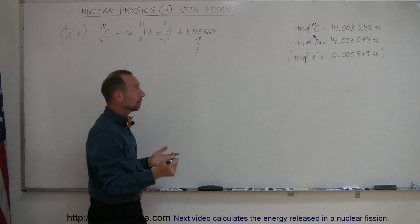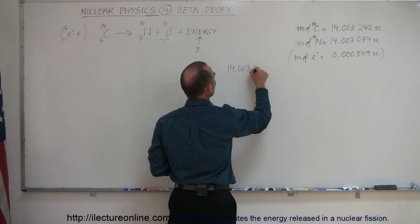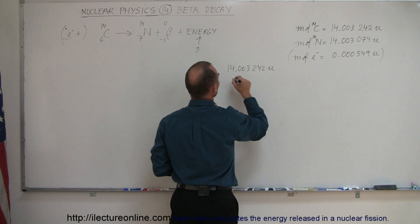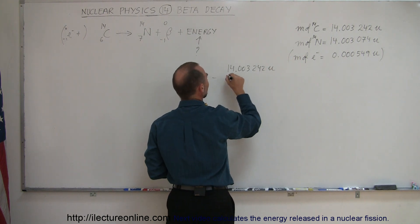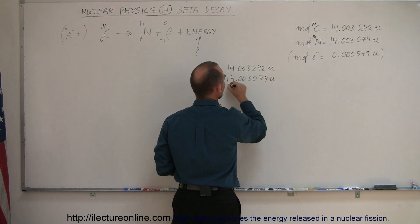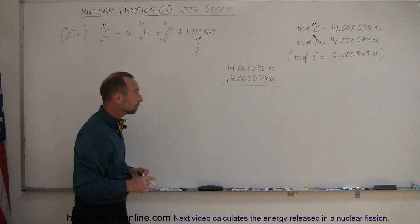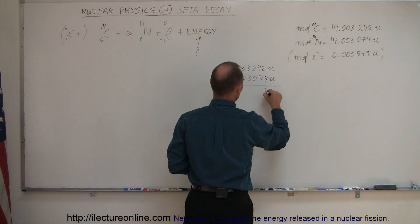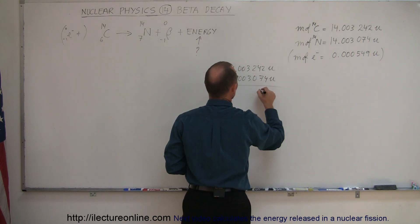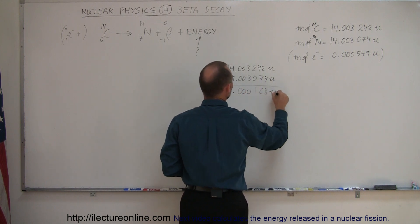Let's go ahead and do that. I have 14.003242 atomic mass units and subtract from that the mass of the nitrogen, which is 14.00324 atomic mass units. Notice that it's less than the carbon nucleus, and therefore it releases energy. So 12 minus 4 is 8, 13 minus 7 is 6, and that becomes 0.000168 atomic mass units.